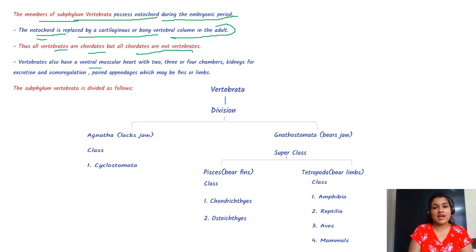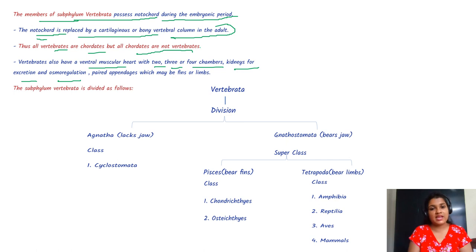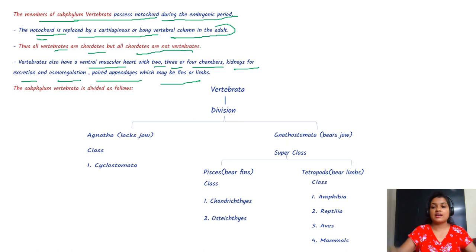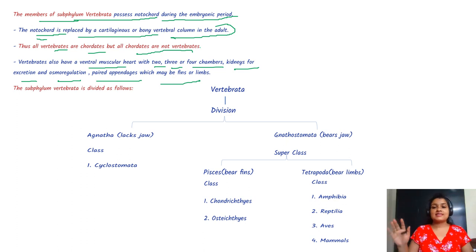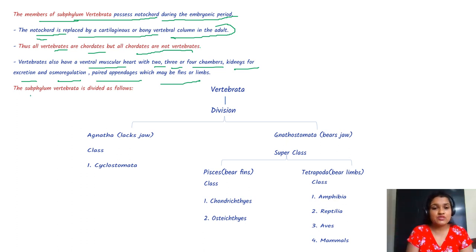Vertebrates have a ventral muscular heart with two, three, or four chambers, kidneys for excretion and osmoregulation, and paired appendages which may be fins or limbs.